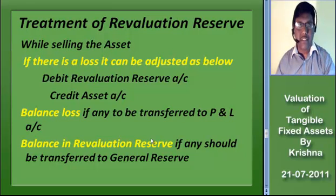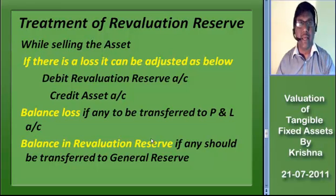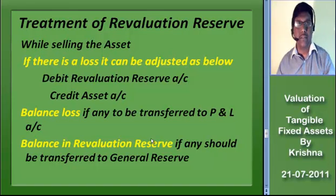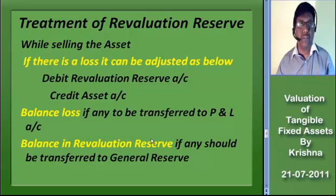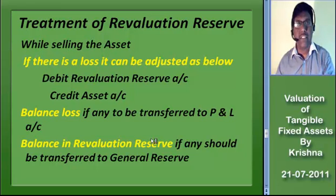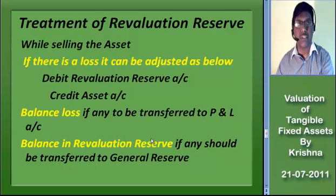If there is a decrease over the revaluation reserve of the particular asset, it can be transferred to the profit and loss account. If the particular asset is fully sold and if there is a loss, it can be transferred to the unutilized revaluation reserve. The balance in the revaluation reserve after the sale of the asset should be transferred to general reserve.